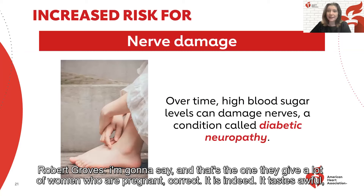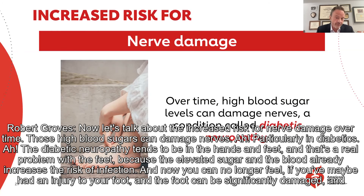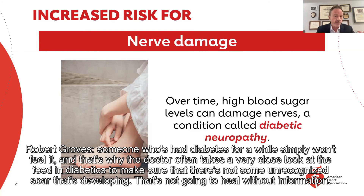That's the test they give a lot of women who are pregnant. Yes — it tastes awful. And that's the third kind of diabetes we'll touch on today, which is gestational diabetes or diabetes of pregnancy. While that usually goes away after delivery, it increases the risk for type 2 diabetes. Now let's talk about the increased risk for nerve damage. Over time, those high blood sugars can damage nerves, particularly in diabetics. Diabetic neuropathy tends to be in the hands and feet, and that's a real problem because the elevated sugar in the blood already increases the risk of infection. You can no longer feel if you've had an injury to your foot, and the foot can be significantly damaged without the person feeling it. That's why the doctor often takes a very close look at the feet in diabetics.